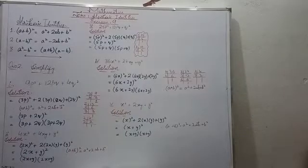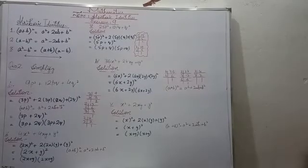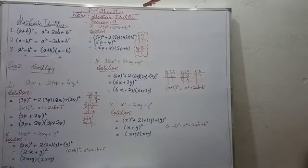Hey students, assalamualaikum, welcome to my channel. Today we will discuss algebraic identity in Chapter 9, Exercise 9. We will start from question number 2, first part, which is 9p² + 12pq + 4q².